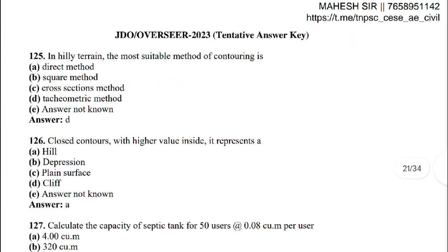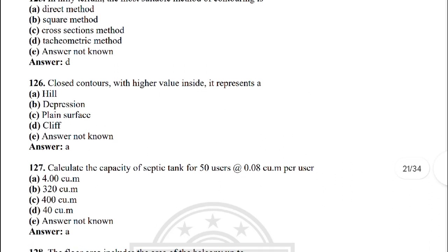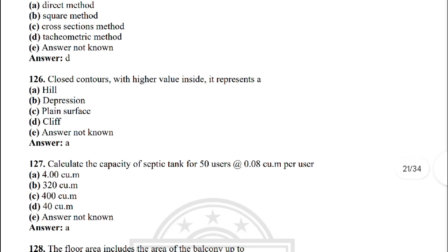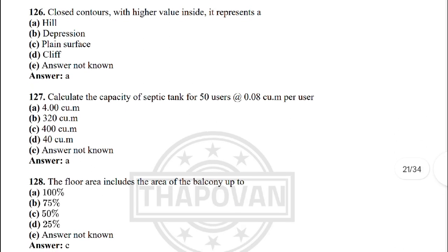Next: slip of a reciprocating pump is defined as — the correct answer is option C: difference of the theoretical discharge and the actual discharge. Next: in hilly terrain, the most suitable method of contouring is — the correct answer is option D: tacheometric method.